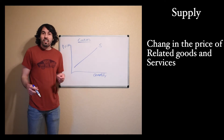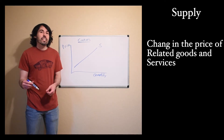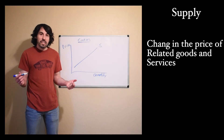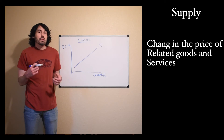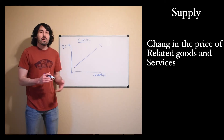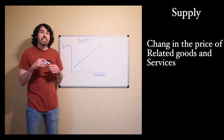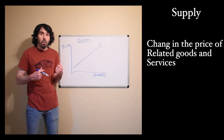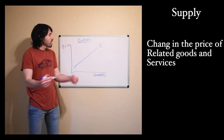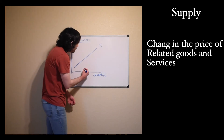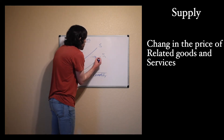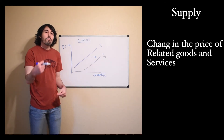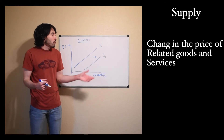Another thing that can cause a shift of the supply curve would be a change in related goods and services. Let's take chocolate bars for instance. If chocolate bars become more expensive, then I would expect people to start buying more cookies. If I think people are going to start buying more cookies, I'm going to try to increase my supply to meet that demand so I can rake in the money. The supply would increase and shift to the right, causing an increase in the supply of cookies at every price — there will be more cookies available no matter what the price is.